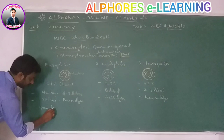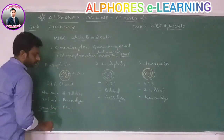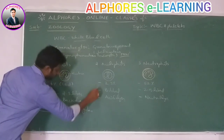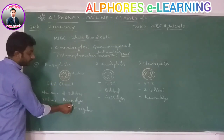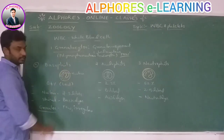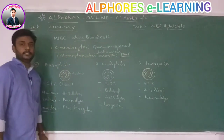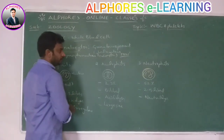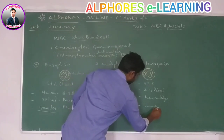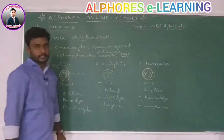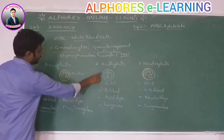Regarding granules in the cytoplasm: basophils have few but irregularly shaped granules — less number of granules. Acidophils have large-sized granules. Neutrophils have a large number of granules present in their cytoplasm.